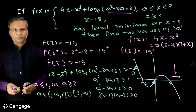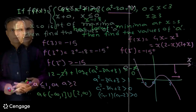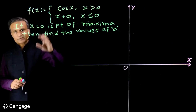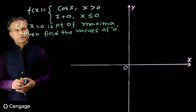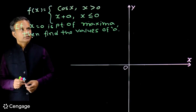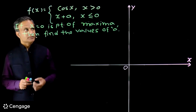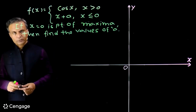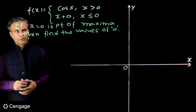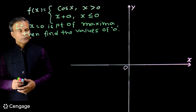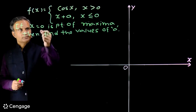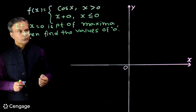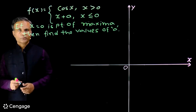We have one more question. The function is defined as f(x) = cos(x) for x > 0, and x+a for x ≤ 0. If this function has a point of maxima at x=0, we have to find the values of a.